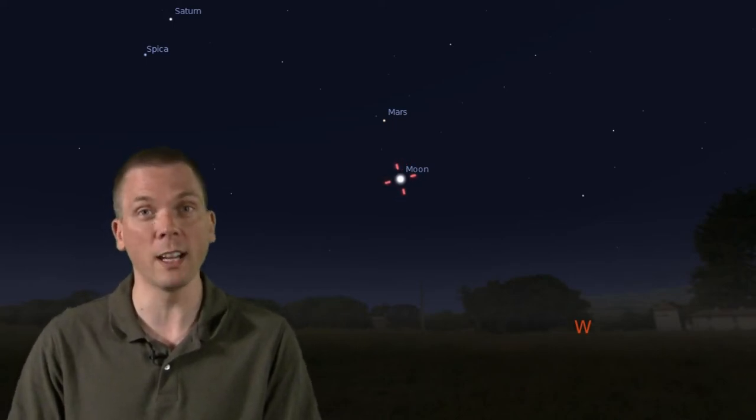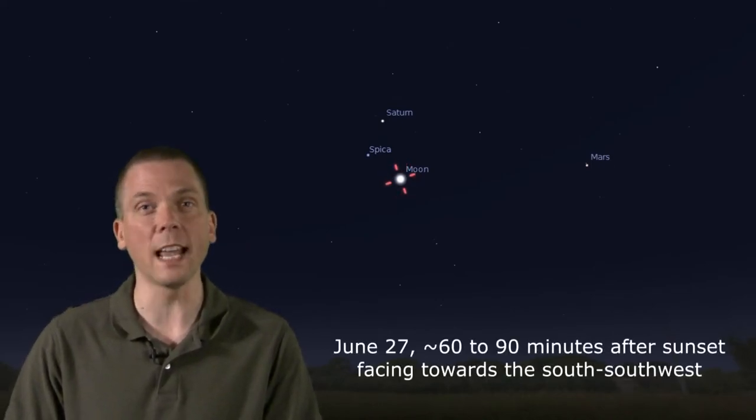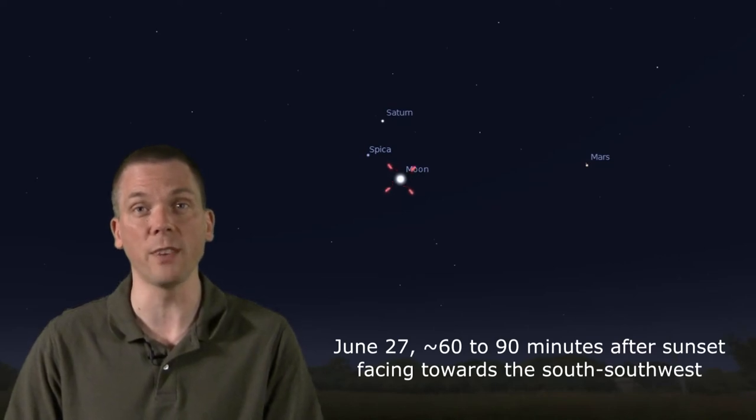But two days later, the first quarter moon forms a lovely triangle with Saturn and Spica, the brightest star in Virgo. If you didn't spot the craters on the moon relating to historical figures of the Venus transit from the May 28th Eyes on the Sky, be sure to review that for more information on it.